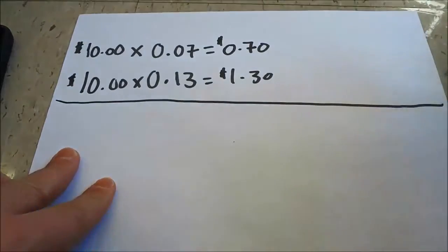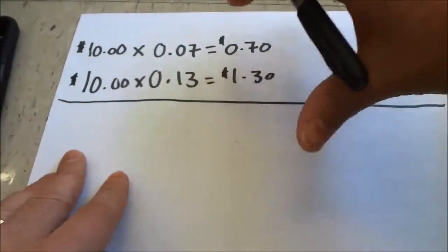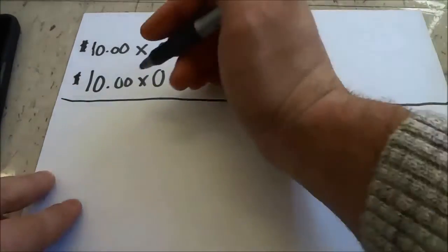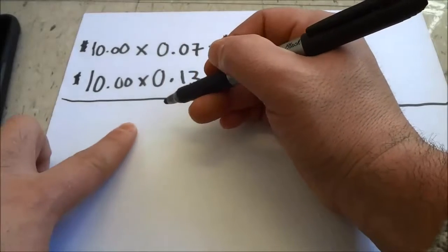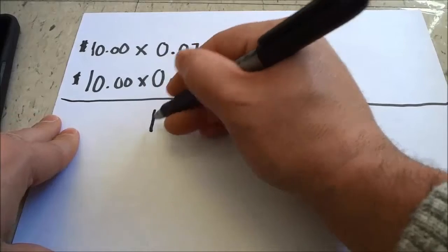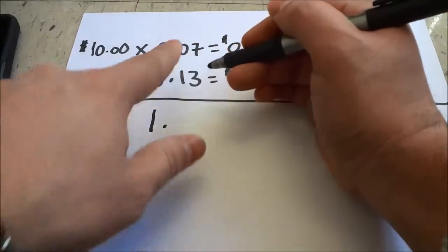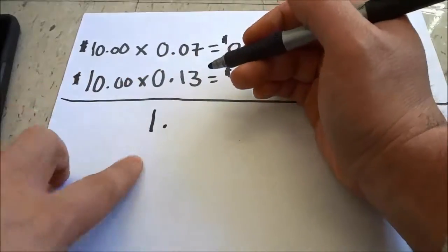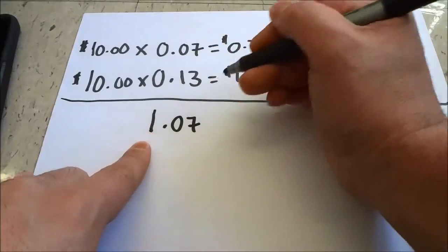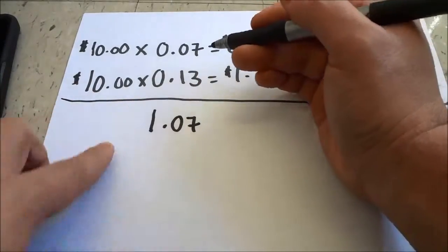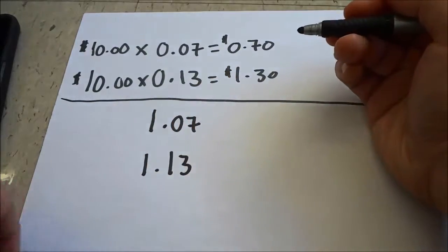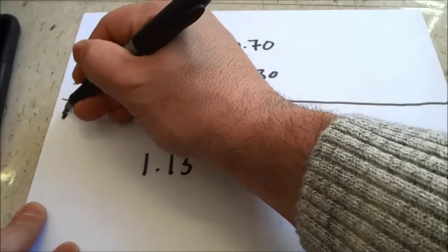Now I'm also going to show you how to calculate the price of the product plus the sales tax on top of it — basically the final price that you will be paying. To calculate the final price, you should multiply the price of the product by one point and then the percentage of sales tax. So if we were talking about a seven percent sales tax, I would multiply by one point zero seven. For thirteen percent, I would multiply by one point thirteen.